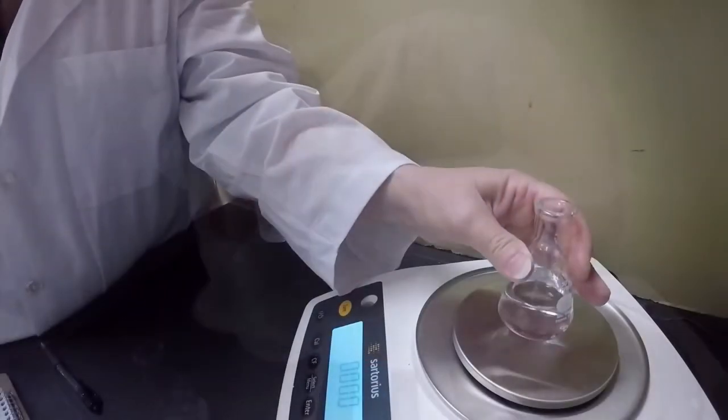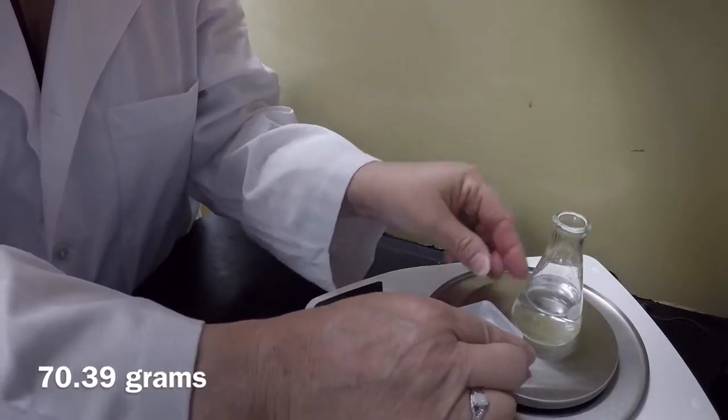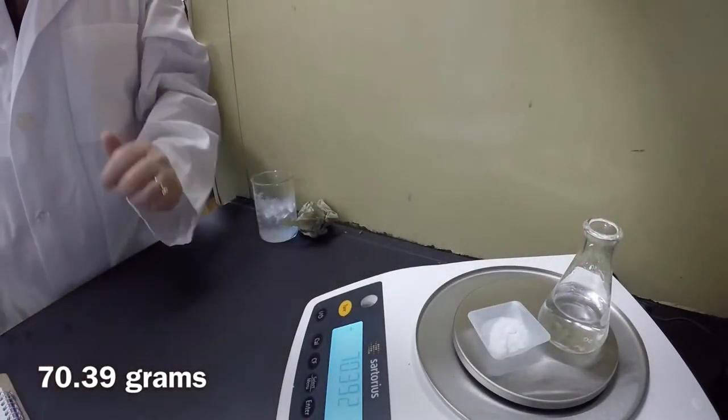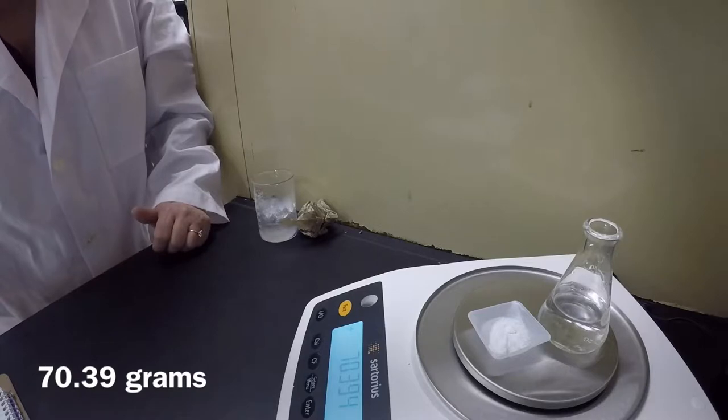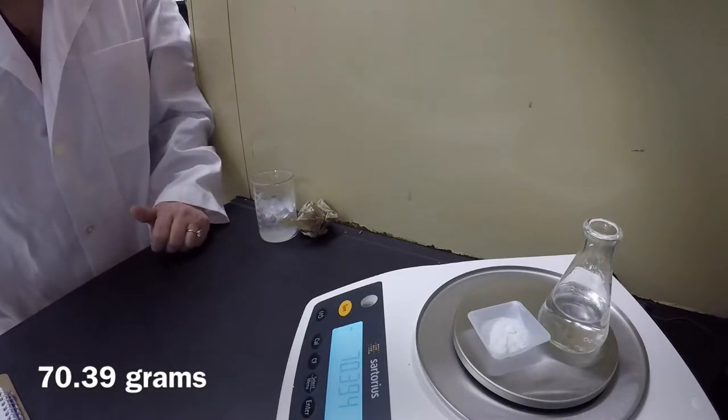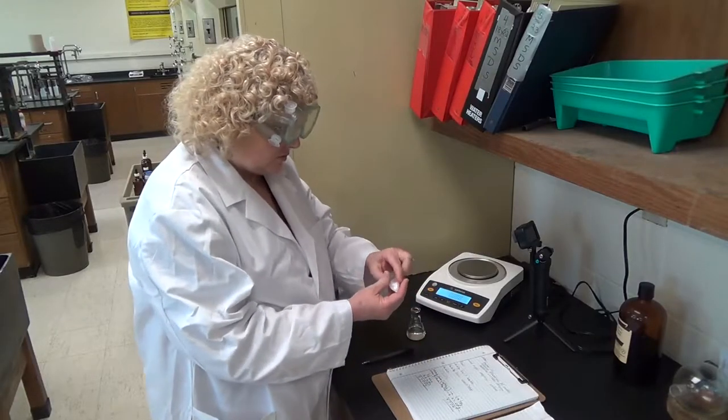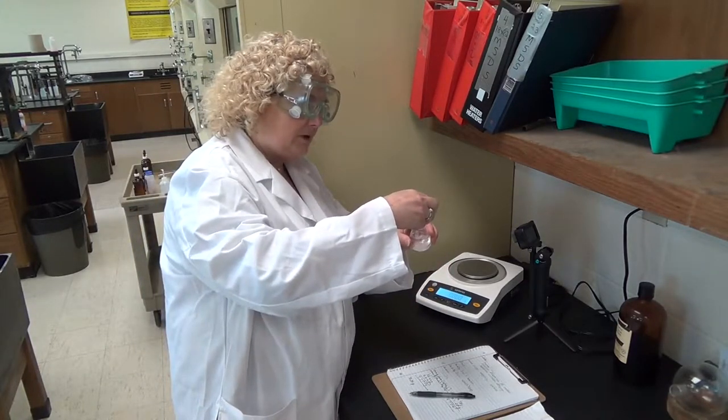I need to weigh both the glucose crystals and my water. And so we can see here that we have 70.39 grams of glucose crystals and water. I'm going to take this glucose crystals, and I'm folding my weighing boat so I don't lose any of it. Allow this to drop down in here.